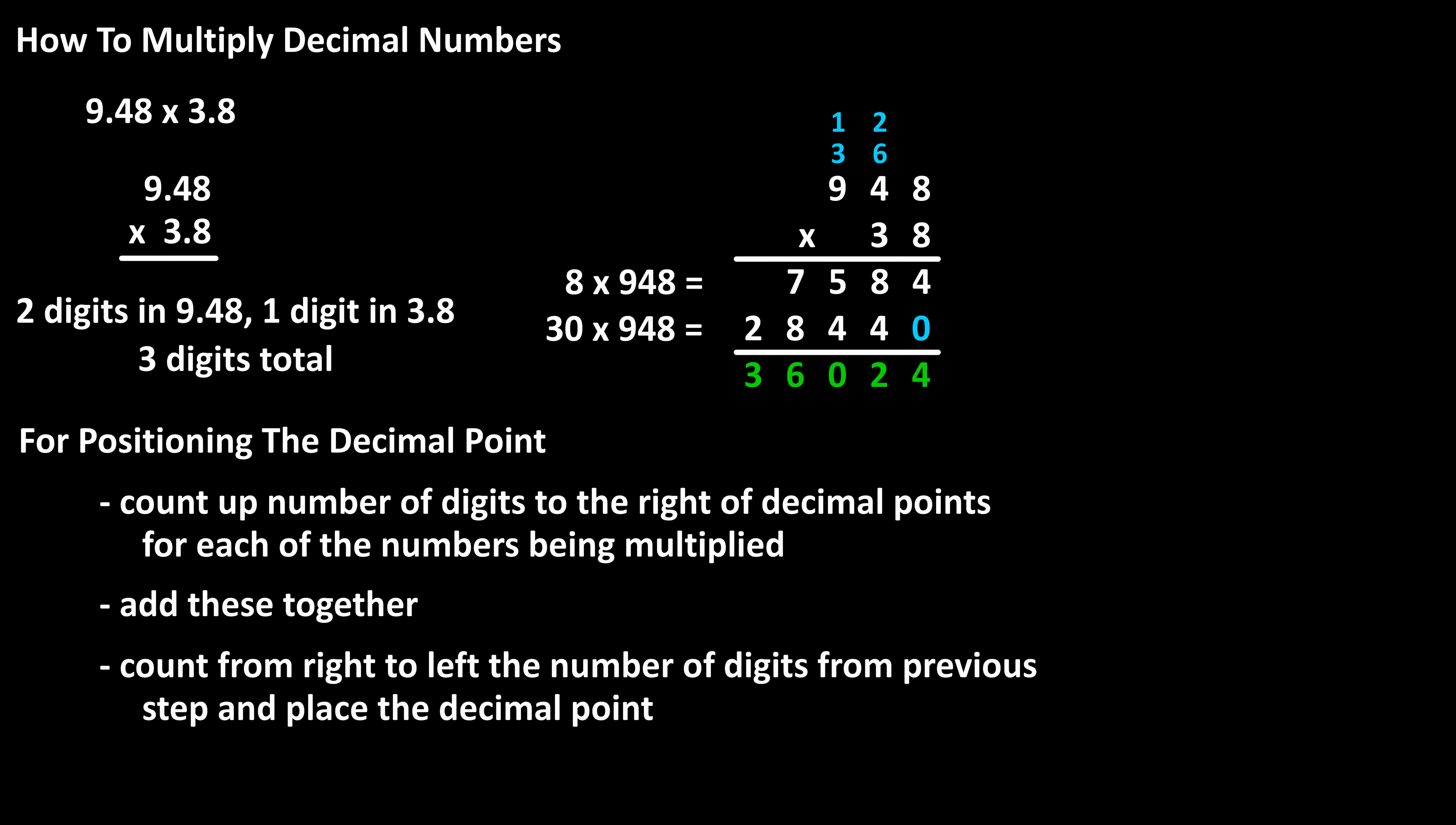Third, in the answer, we count from right to left the number of digits we got from step two and place the decimal point. So in our answer of 36,024, we go over three places, which is between the six and the zero, and we place the decimal point.